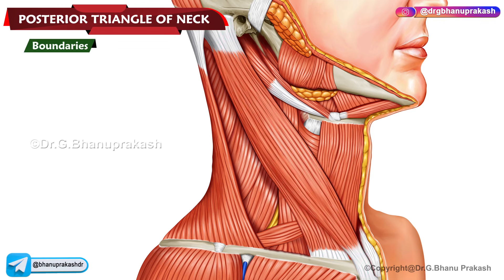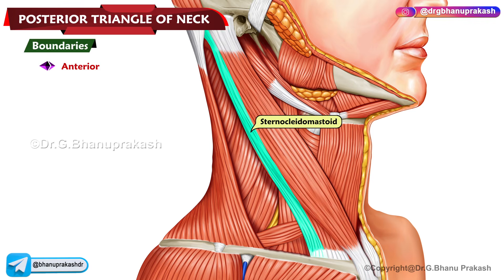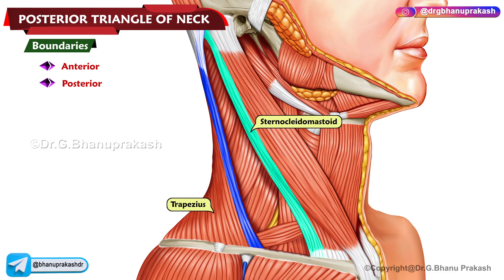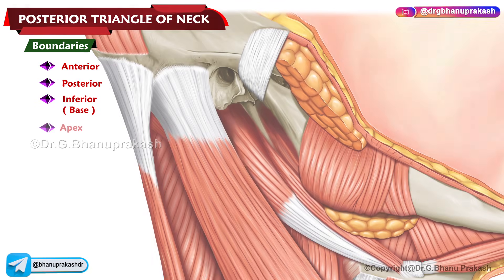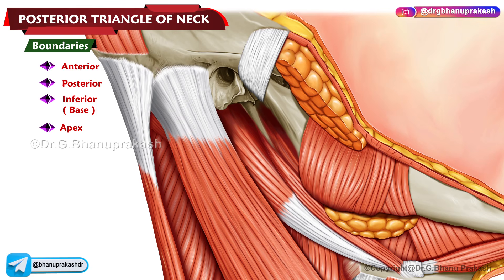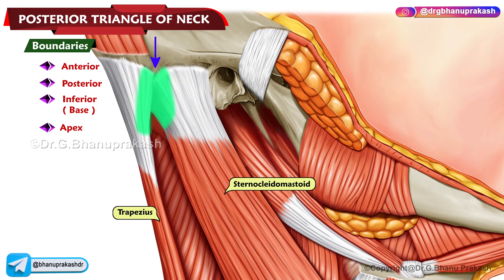Boundaries. It is bound anteriorly by the posterior border of the sternocleidomastoid muscle. Posteriorly, it is bound by the anterior border of the trapezius muscle. The inferior border or base is formed by the middle one-third of the clavicle. The apex lies on the superior nuchal line where the trapezius and the sternocleidomastoid muscles meet.